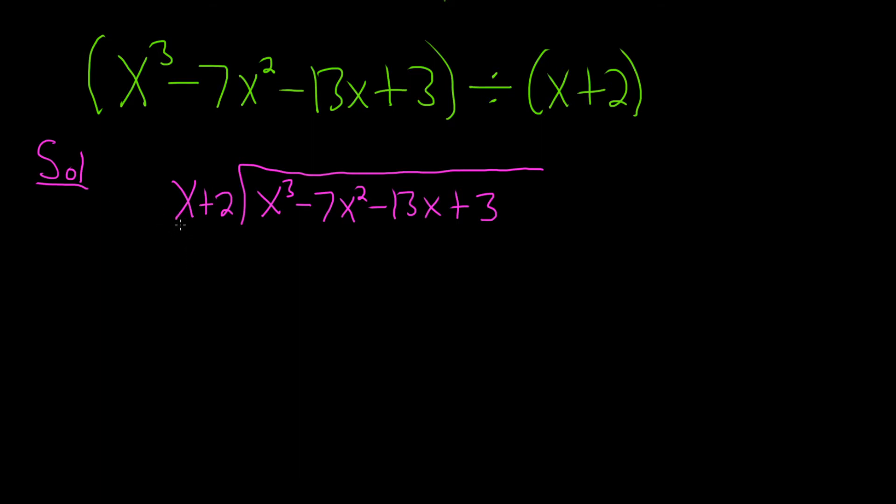So first you look at the x here, and you say, what do you have to multiply by x in order to get x cubed? So x squared. So then you put it here, and you match it with the x squared, because x squared times x is x cubed, and notice it's above the x squared term.